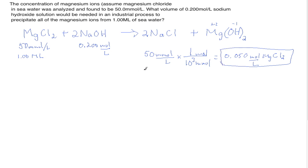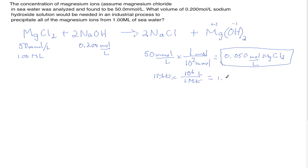Likewise, we need to convert 1.00 megaliter of seawater to liters, since our standard unit for volume is liters. In one megaliter there are one million liters, or 10⁶ liters, giving us 1.00 × 10⁶ liters.